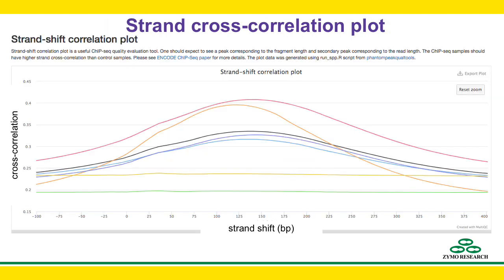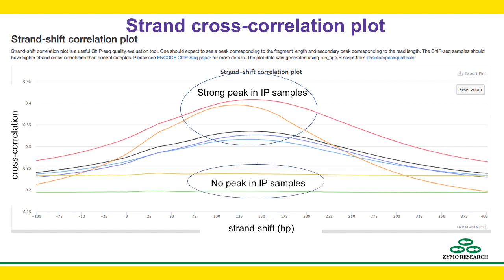If you plot the strand cross-correlation against the number of base pairs shifted, you get a curve like these. For a good ChIP-seq experiment, you can expect strong peaks at around the length of the IP fragment. For control samples with input DNA or IgG, you should get almost no peaks. It is also possible to see a secondary peak at about read length, especially in an experiment where the main peak signal is weak. There are also numeric measures of this curve, known as NSC and RSC scores, which are widely used in ENCODE projects. You can find more details in our sample report.